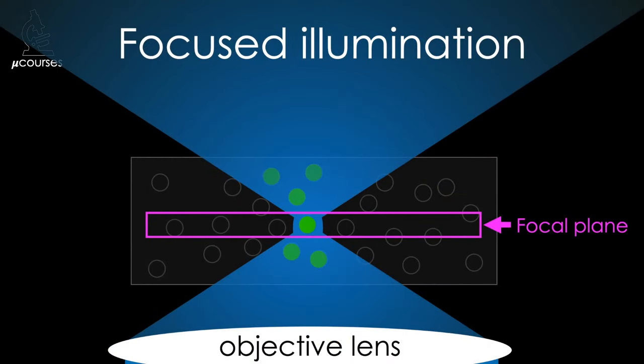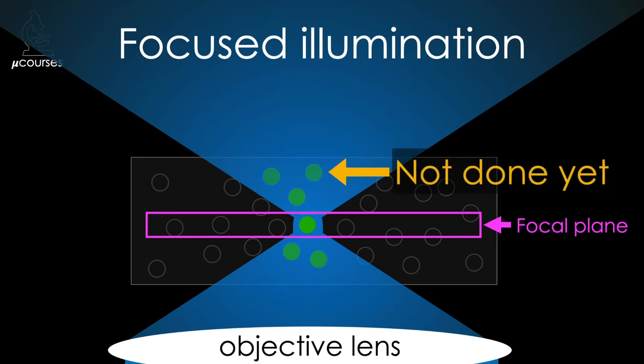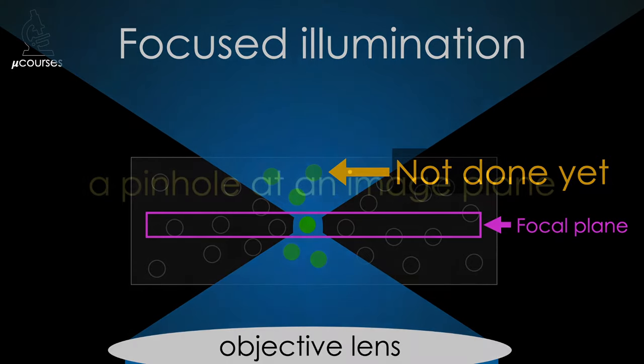Focused illumination restricts excitation of fluorophores to a small portion of the field of view, but light traveling through the sample both above and below the focal plane still excites fluorophores that generate out-of-focus fluorescence. This is dealt with by the second feature of the confocal principle: a pinhole at an image plane.